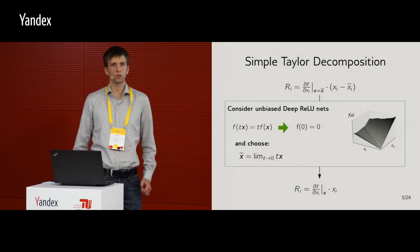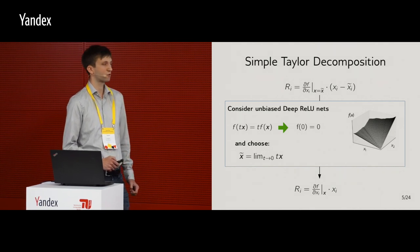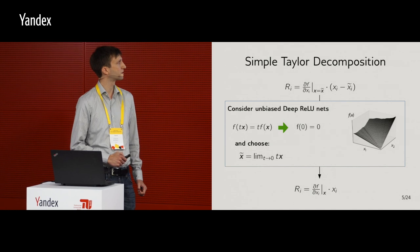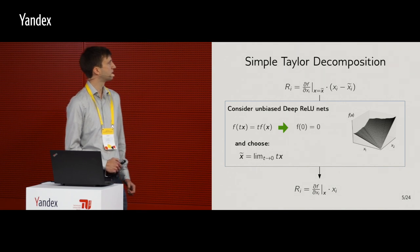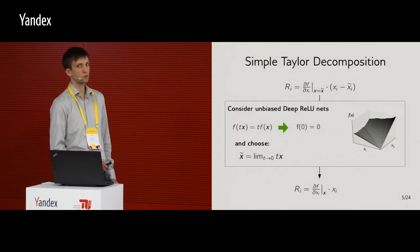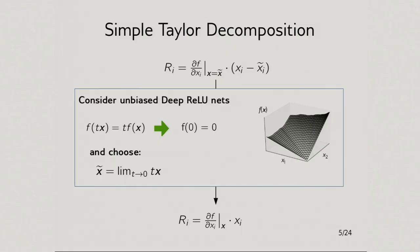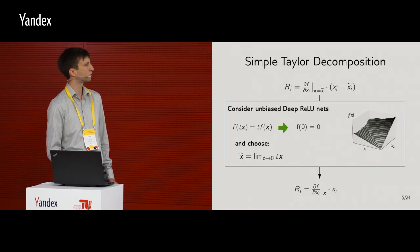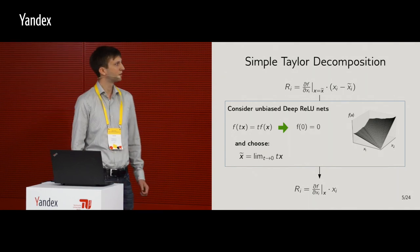So in general, it's quite complex to find a root point, but there are a special class of models for which it's easy. And actually, it's not only linear models, it's much more complex. It's unbiased deep ReLUs. So just ReLUs where the biases are at zero. And it has this property that if you multiply the input by T, then the score also gets multiplied by T. There are two nice things about it. The first thing is that actually you do have a root point at the origin, and you can choose the root point to be the limit as you move your data point towards the origin. And you will take the root point here, and then you have a closed form for the relevance score, which is just the gradient times the activation. Very simple. Does it work? No.